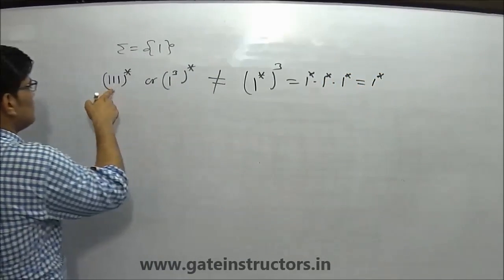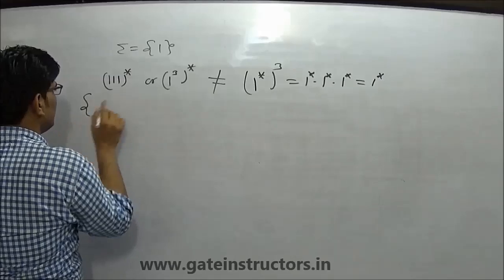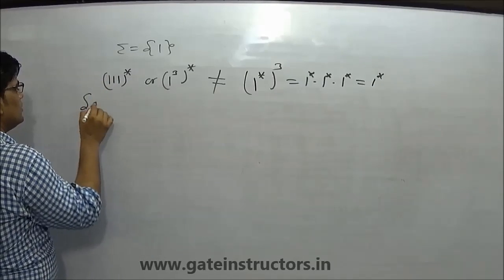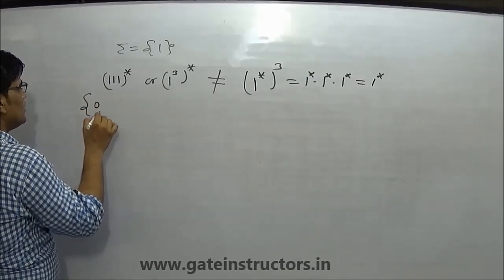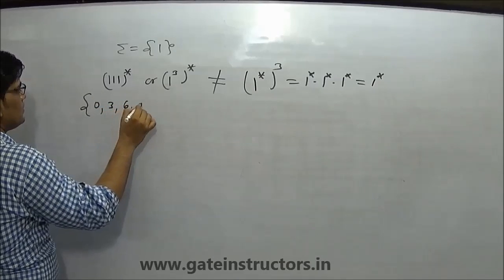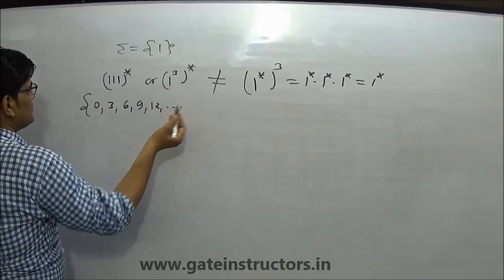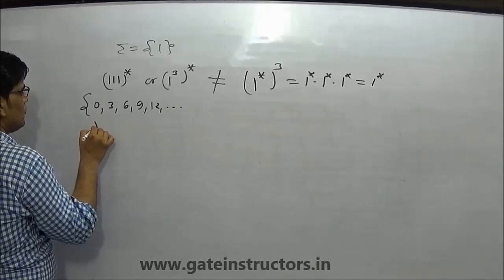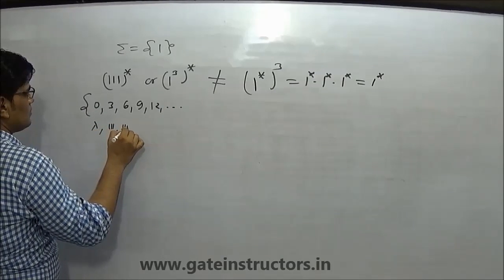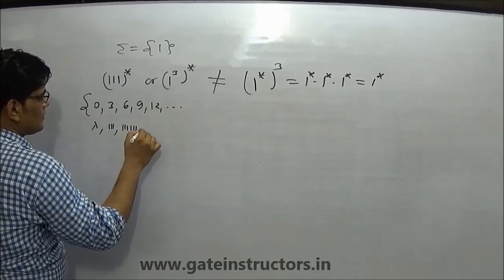Here we will get multiples of three, like 0, 3, 6, 9, 12 — so we will get strings of length 0, 3, 6, 9, 12. The strings will be: empty (0 ones), then 3 ones, then 6 ones, then 9 ones — this is the type of string we get.